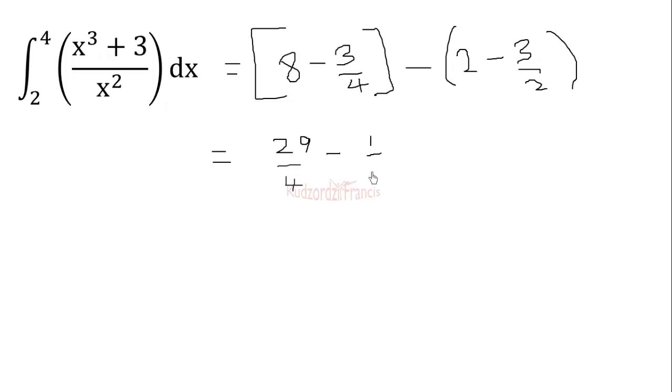So we subtract further to get... This is the same as 29 over 4 minus 2 over 4. And that will give us 27 over 4, which is the same as 6 and 3 over 4.